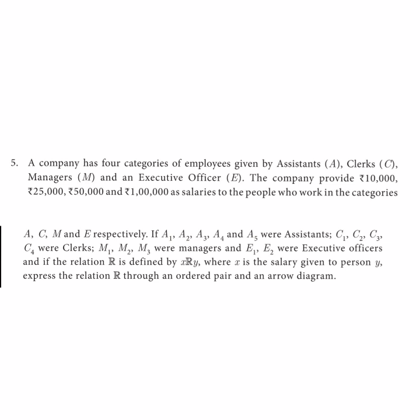There are 5 Assistants: A1, A2, A3, A4, A5. The Clerks are 4: C1, C2, C3, C4. The Managers are 3: M1, M2, M3. The Executive Officers are E1, E2 — 2 people. Now, if the relationship is defined by R, then X R Y is defined by X is the salary given to the person Y.